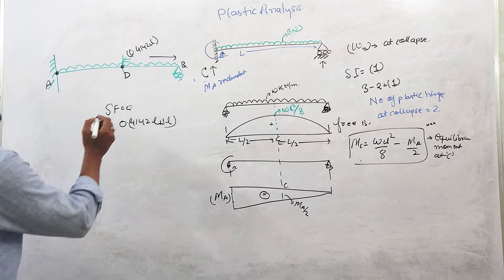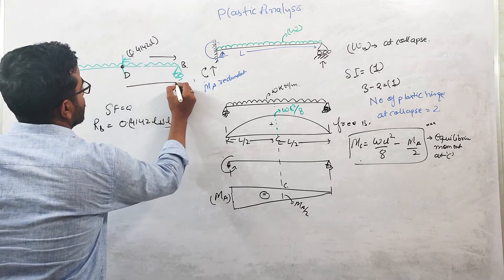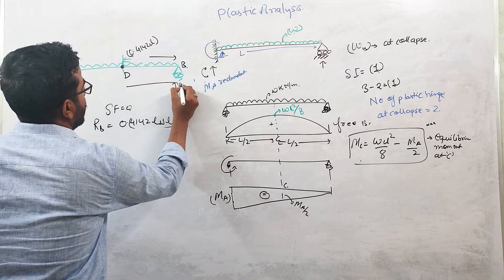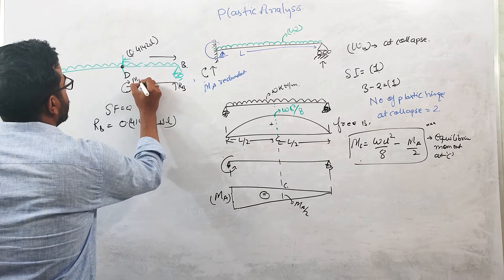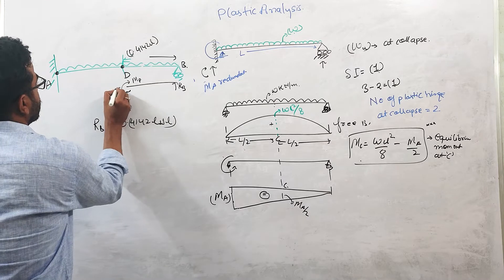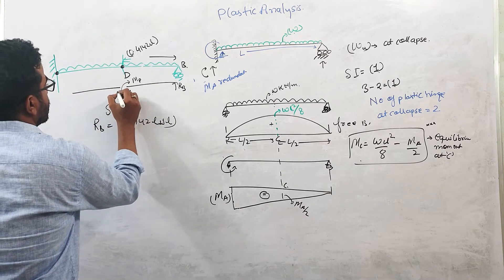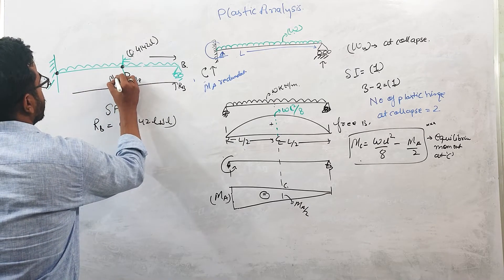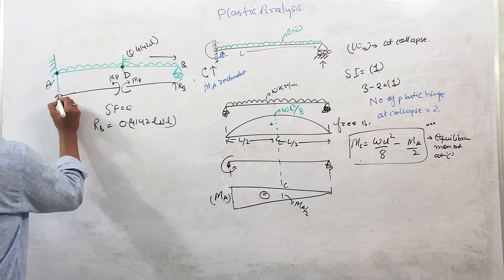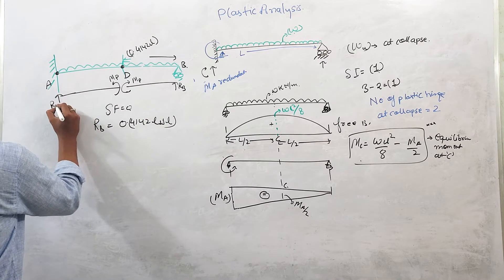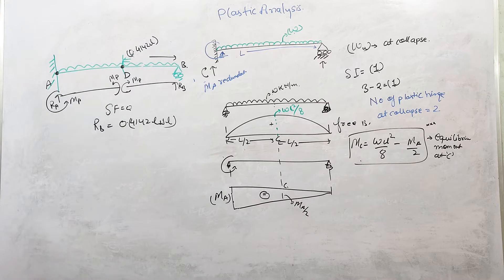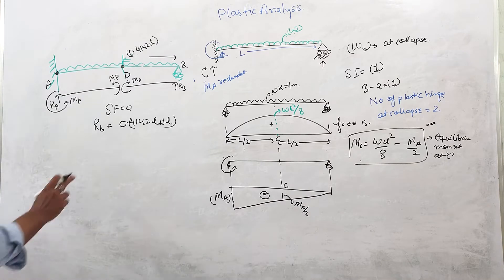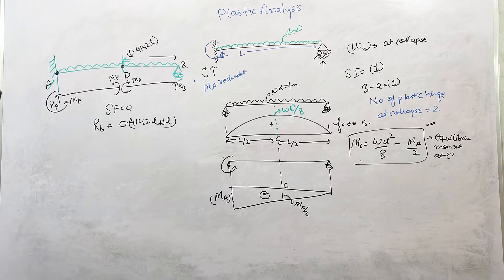Drawing the free body diagram: there is RA and RB, with moment MP at point A and moment MP at point D. So RB = 0.4142 WL. Point C is also marked on this diagram.